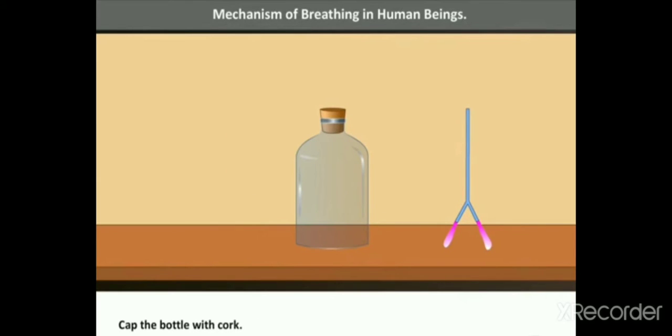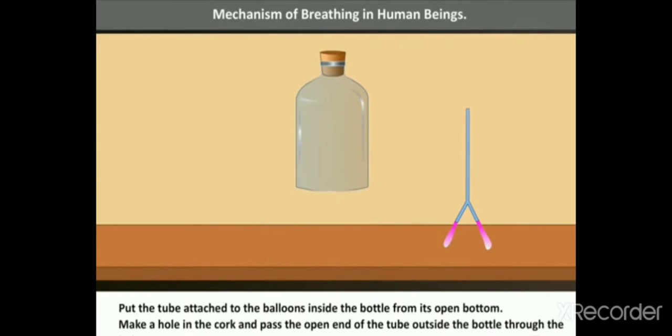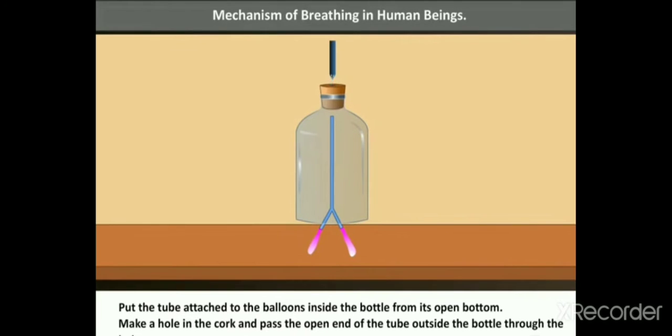Cap the bottle with cork. Put the tube attached to the balloons inside the bottle from its open bottom. Make a hole in the cork and pass the open end of the tube outside the bottle through the hole.